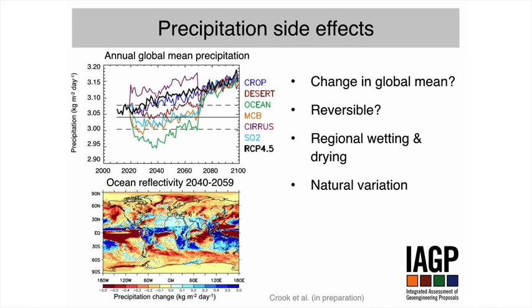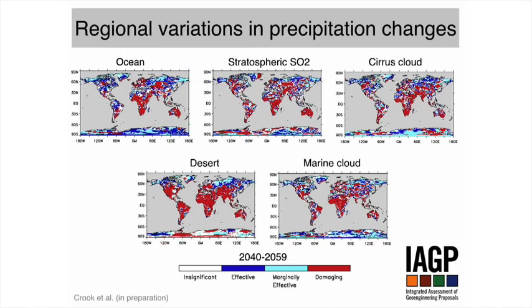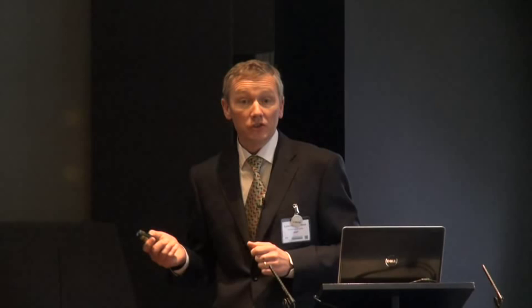Even if your global change is acceptable or achieves some kind of target, you see very strong regional changes as well. In the mid-latitudes you get a drying, largely related to the cooling of temperature because of geoengineering, and you get the shift in the monsoon and the ITCZ. Red colours show drying and blue colours show a wetting of climate. This is in a 20-year mean for a decade when geoengineering from a temperature point of view was probably most effective. Using the same categories as before, you see very large perturbation to precipitation, with large areas showing what we've called damaging change.